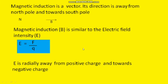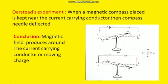Just like the electric field formula is force divided by charge, the magnetic field formula is force divided by pole strength — instead of charge, pole strength is used here. The electric field is radially away from a positive charge and towards a negative charge, but magnetic induction is away from the north pole and towards the south pole.